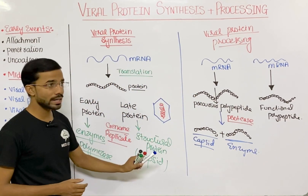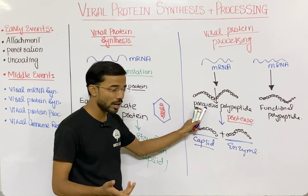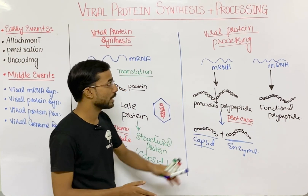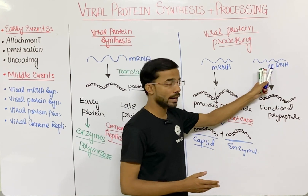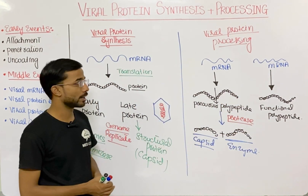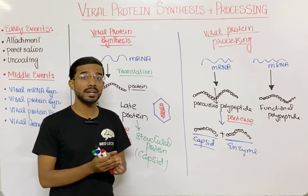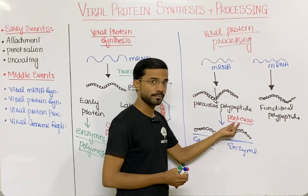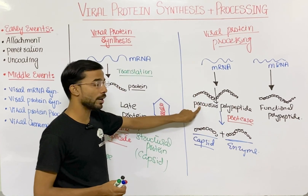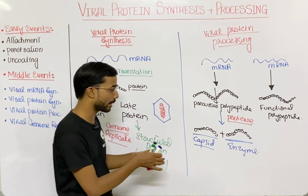So you will see two categories. First, some messenger RNA converts into a precursor polypeptide, and after that forms the functional polypeptide. Then some viral messenger RNA converts directly into the functional polypeptide. Mostly those enzymes that produce the protease first form the precursor polypeptide, and after that form the functional polypeptide.